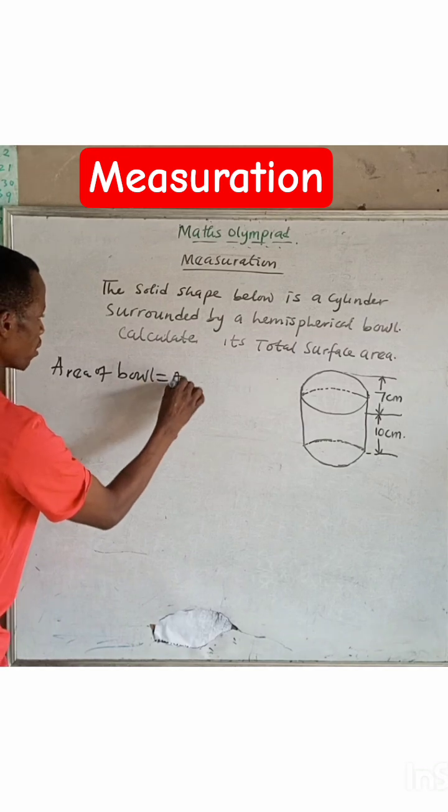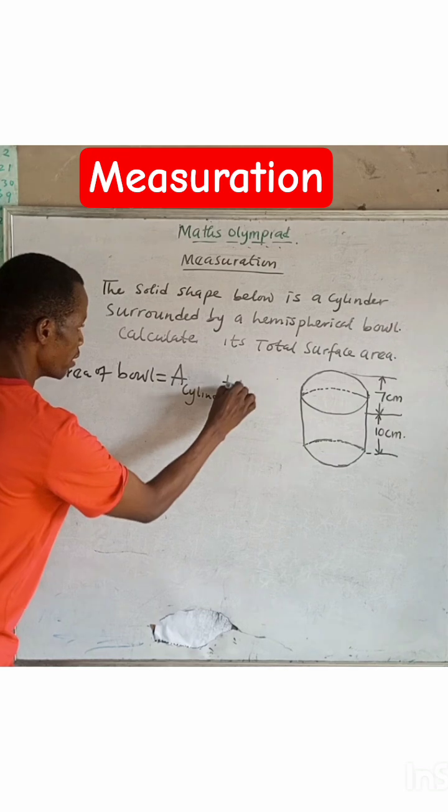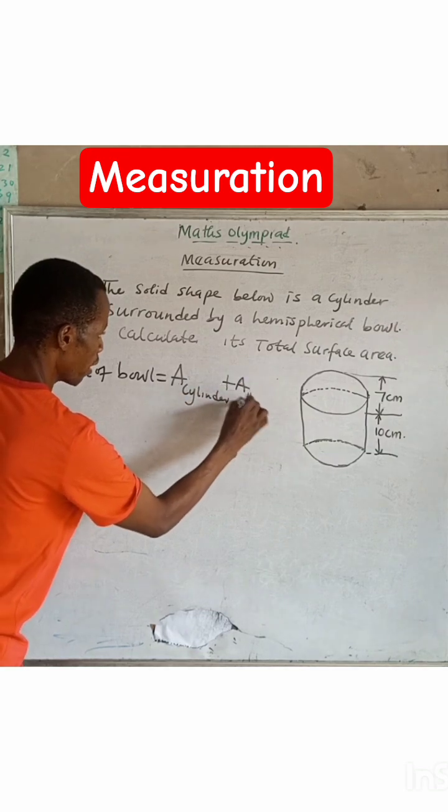Now the area will give us the area of cylinder plus area of hemisphere.